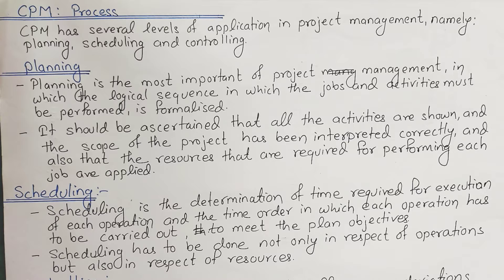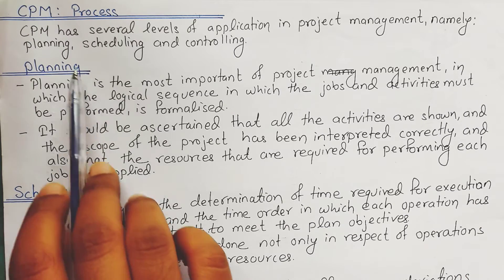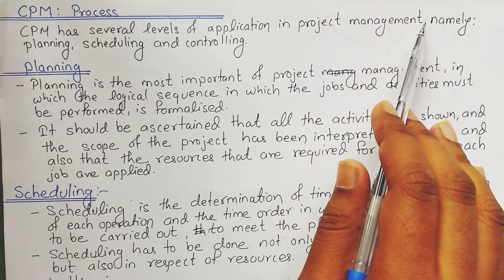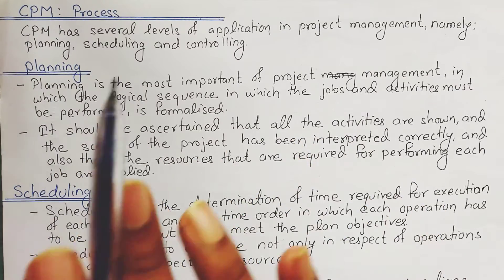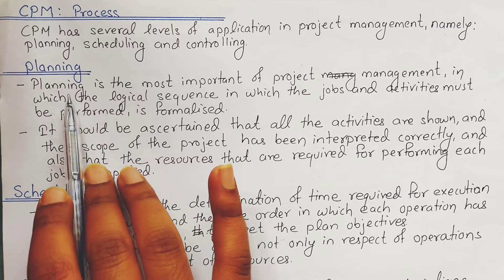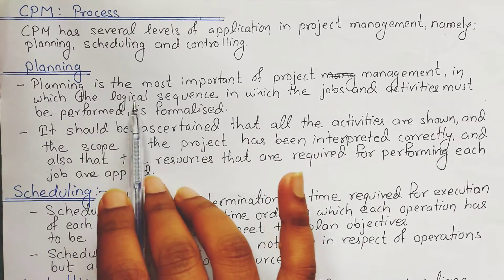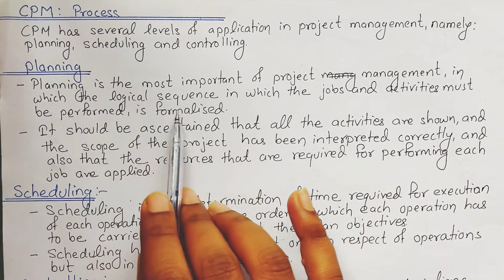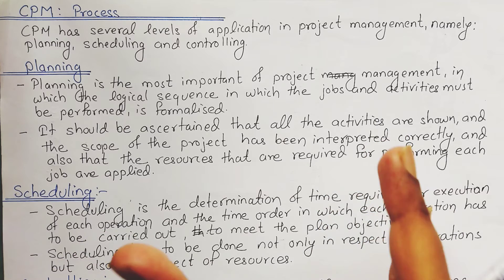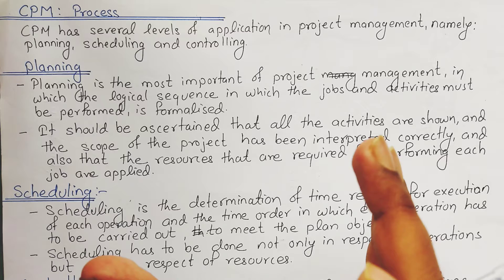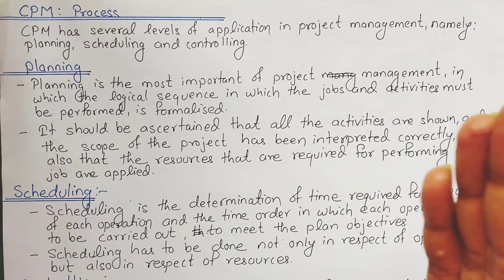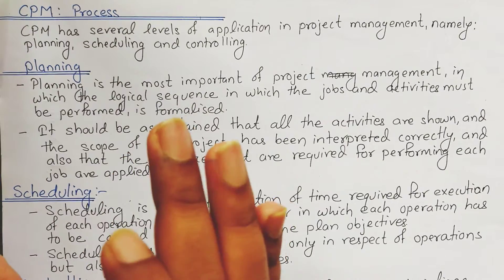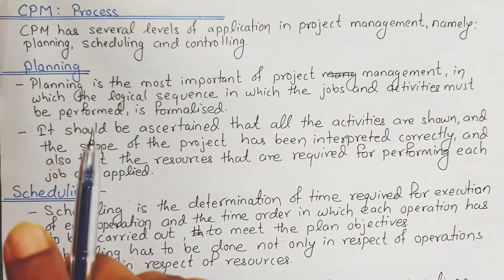Now here comes the CPM process — the application steps. CPM has several levels of application in project management, namely: planning, scheduling, and controlling. Planning is the most important step in project management, in which the logical sequence in which jobs and activities must be performed is formalized. Before carrying out any activity, we have to formalize different activities in the order of their importance — that is called planning.